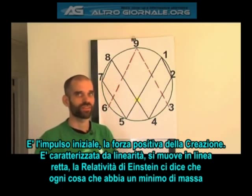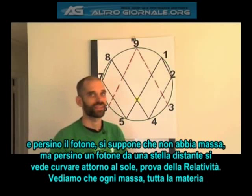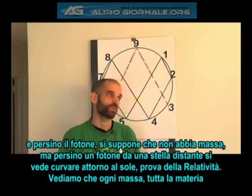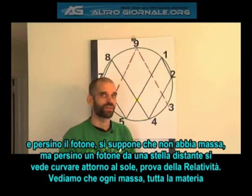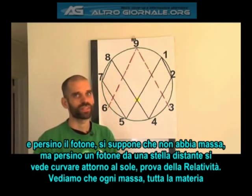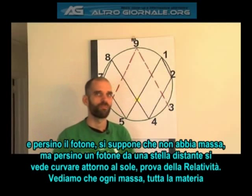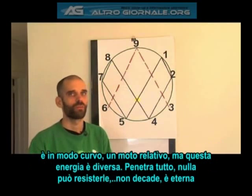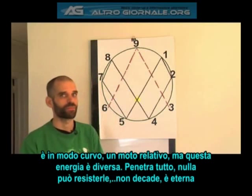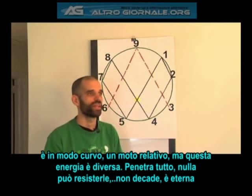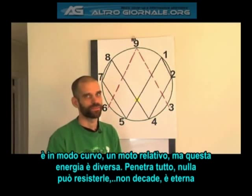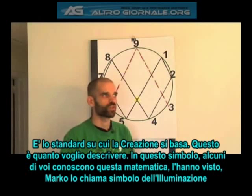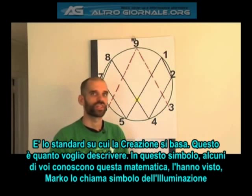Every bit of mass — Einstein's relativity will tell us everything with even a slight bit of mass, even a photon, which is supposed to have no mass — even a photon coming from a distant star was seen to curve around the sun, proving that relativity existed. This shows that all mass, all matter is in a curved motion, a relative motion. This energy is different from that. It penetrates everything, nothing can resist it, and it leaves a grain on everything. It is undecaying and eternal, and it is the control and standard upon which all of creation is based.